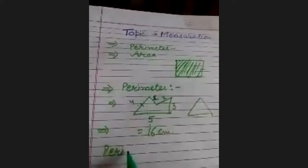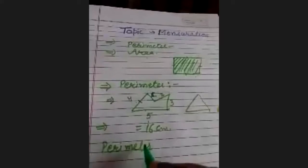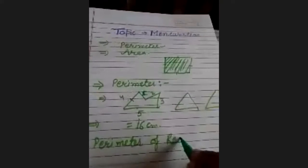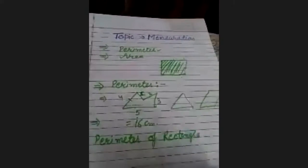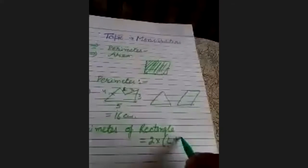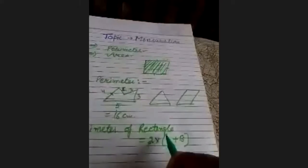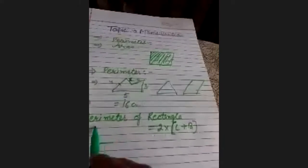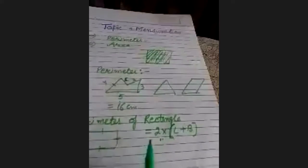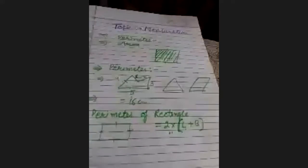Next point: perimeter of a rectangle. The perimeter of a rectangle is 2 × (length + width). Here, length and width are the two dimensions of the rectangle. Using this formula we can find the perimeter of any rectangle.